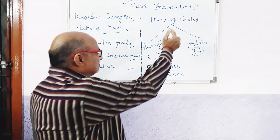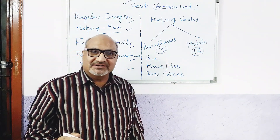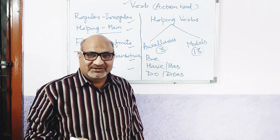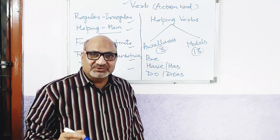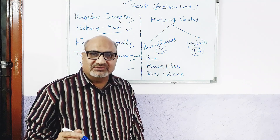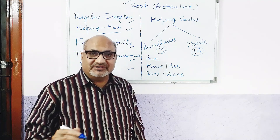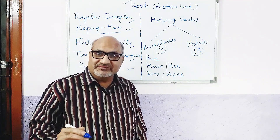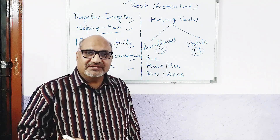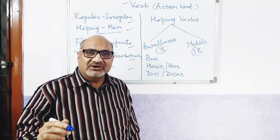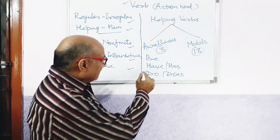The helping verbs are divided into two categories: auxiliaries and modals. Here the question arises, what is the difference between these two areas? Auxiliary verbs are those verbs which are used to form sentences as per tense rules, passive voice, interrogative and negative constructions. Modal or modal verbs are those verbs which are used to convey different meanings in different sentences like permission, capacity, need, necessity, or obligation, etc. Auxiliary verbs are three: be, have, and do.